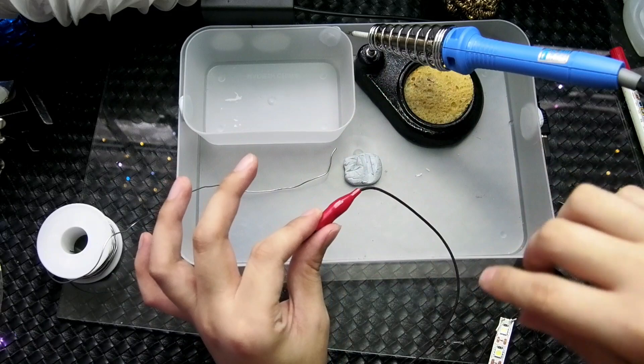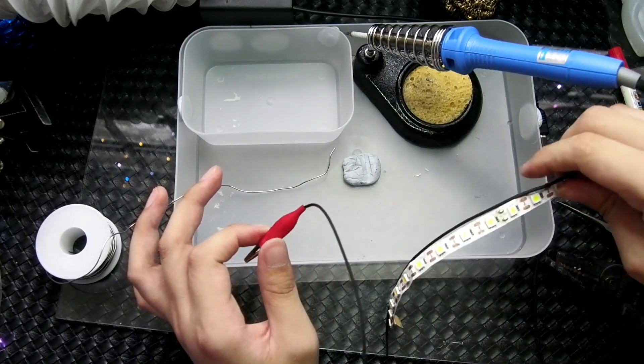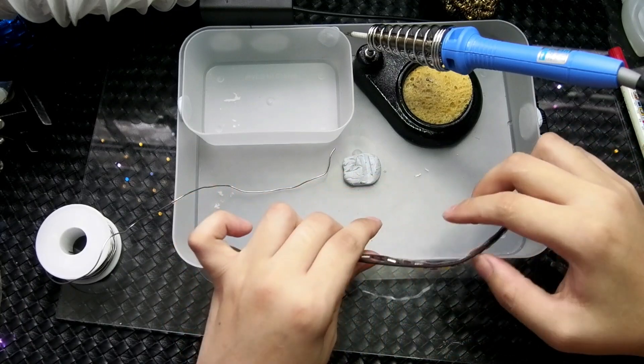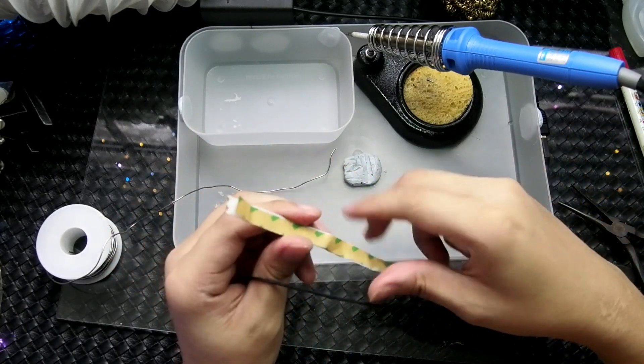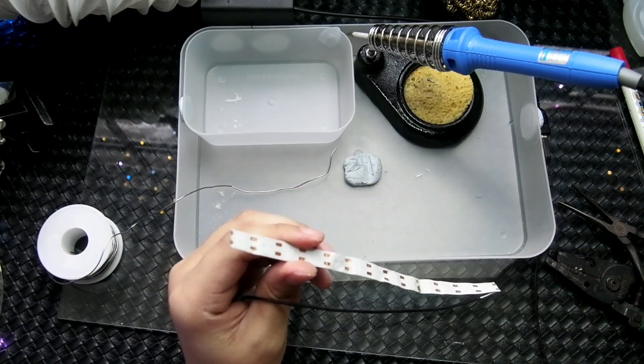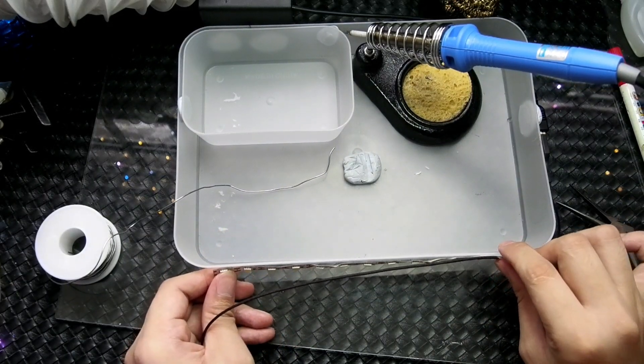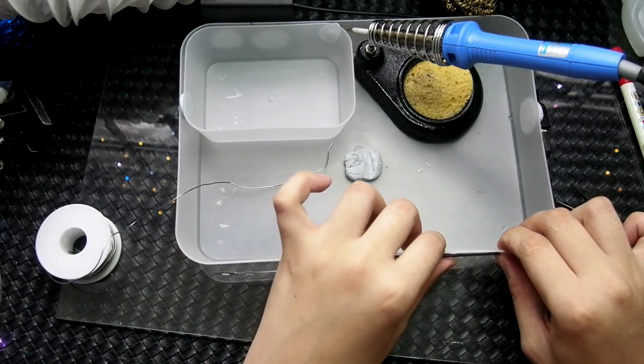We have everything ready so what is left is to install this LED strip onto the tray. So how we are going to do it, there is already adhesive on the back of the strip but mine is very old and it's very worn out so I'll just use it as a guide and we'll finish it with a clear tape.